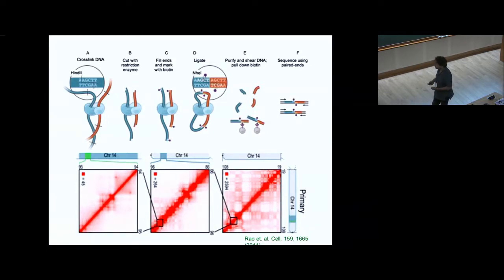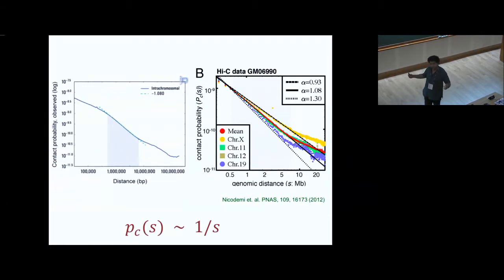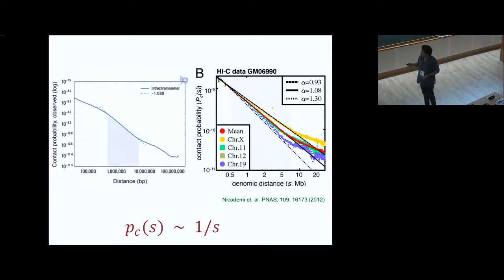From these contact matrices you can calculate the contact probability — what is the probability that two segments of the chromatin fiber separated by S base pairs come into contact with each other? If you plot the data from experiments, there appears to be a nice power law: the contact probability roughly scales as one over S, i.e., P(S) ~ S^(-1).